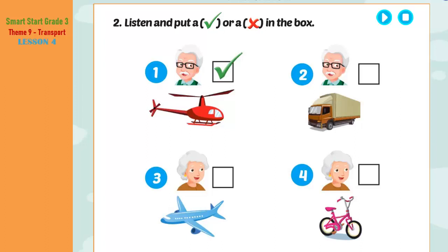B. Two. Listen and put a tick or a cross in the box. Look at the pictures. Listen. There is one example. One. Hi, Grandpa! Hi, kids! Grandpa, can you fly a helicopter? Yes, I can, Alfie! Can you see the tick? This is an example. Now listen and put a tick or a cross in the box. Two. Grandpa, can you drive a truck? No, I can't, Ben. Three. Hey, Grandma, can you fly a plane? No, I can't, dear.